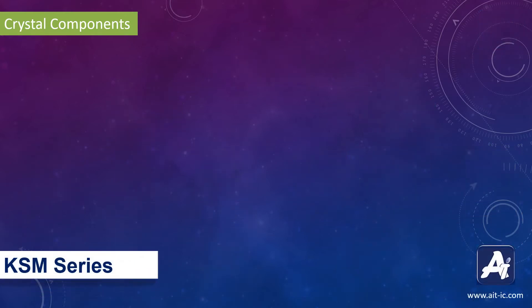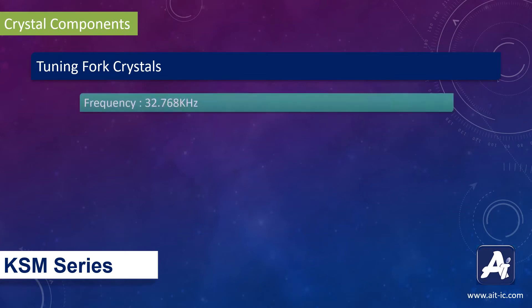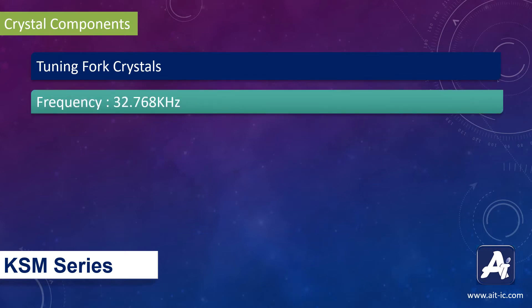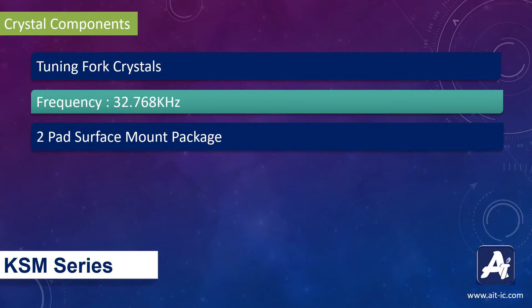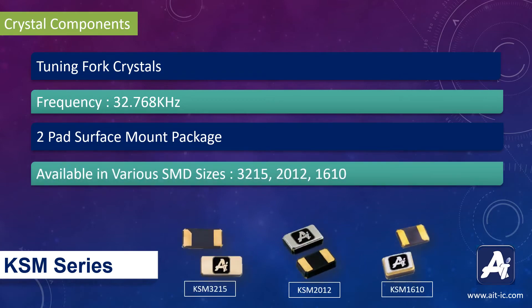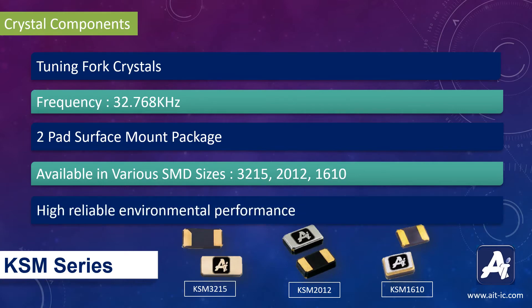Let's start with the KSM series. KSM series is tuning fork crystals with a fixed frequency of 32.768 kHz. These crystals are two-pad surface mount package crystals. They are available in SMD sizes of 3125, 2012, and 9610. These crystals have high-level environmental performance.